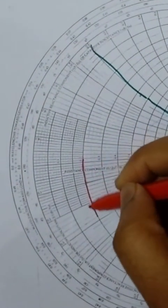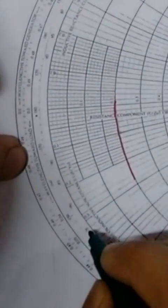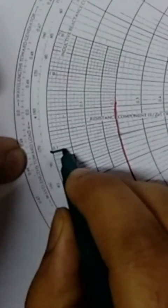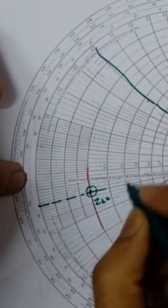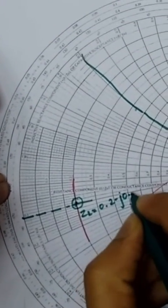0.2, you can say I'm extending here, and minus 0.1j. You can see here, minus 0.1, I'm extending here. This is the point. You got this value: ZL is equal to normalized ZL of 0.2 minus j0.1.